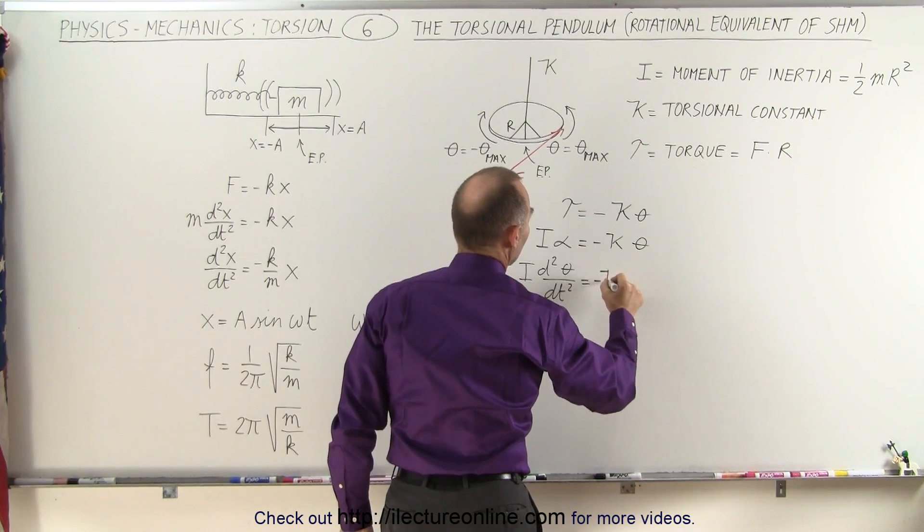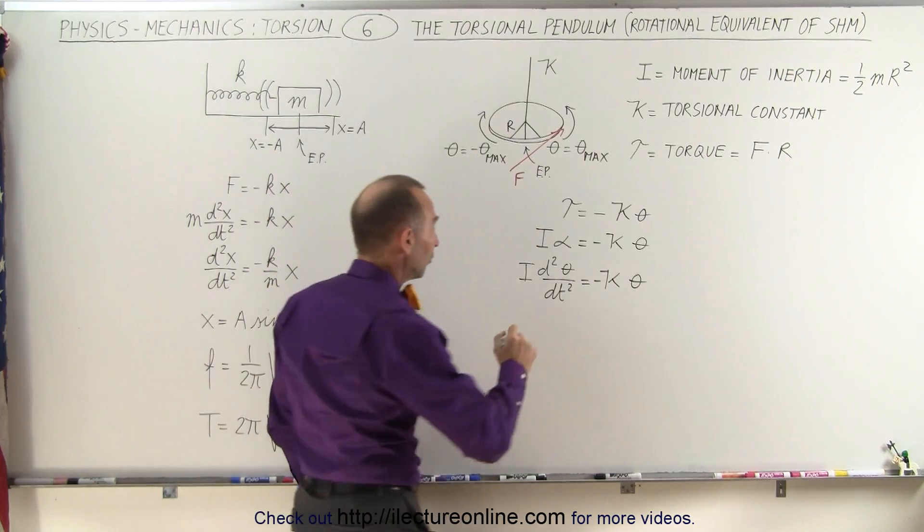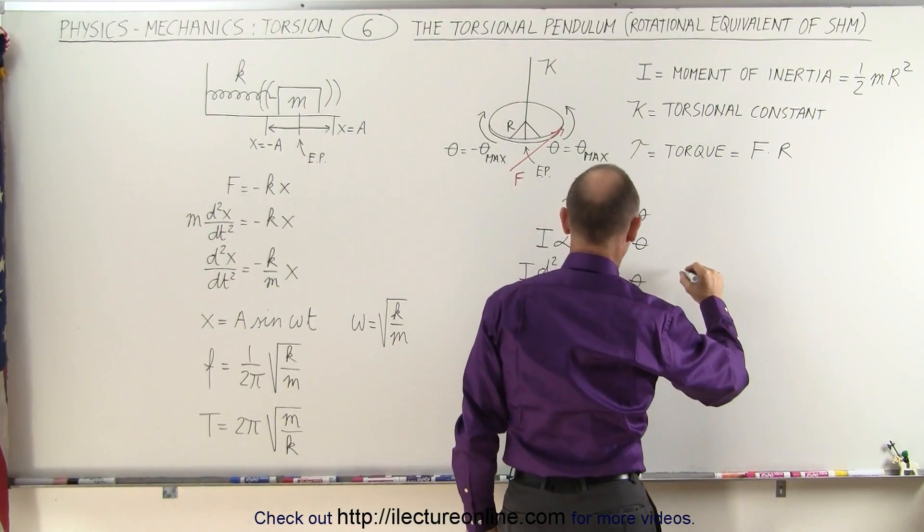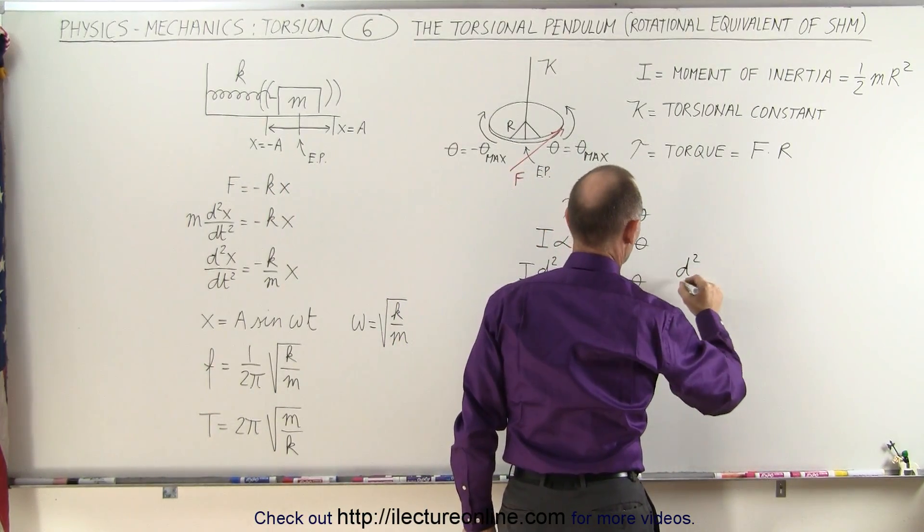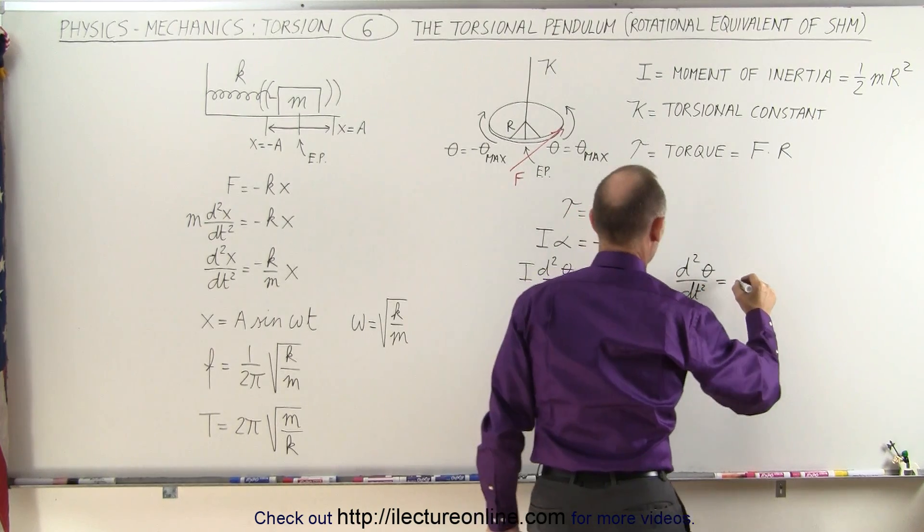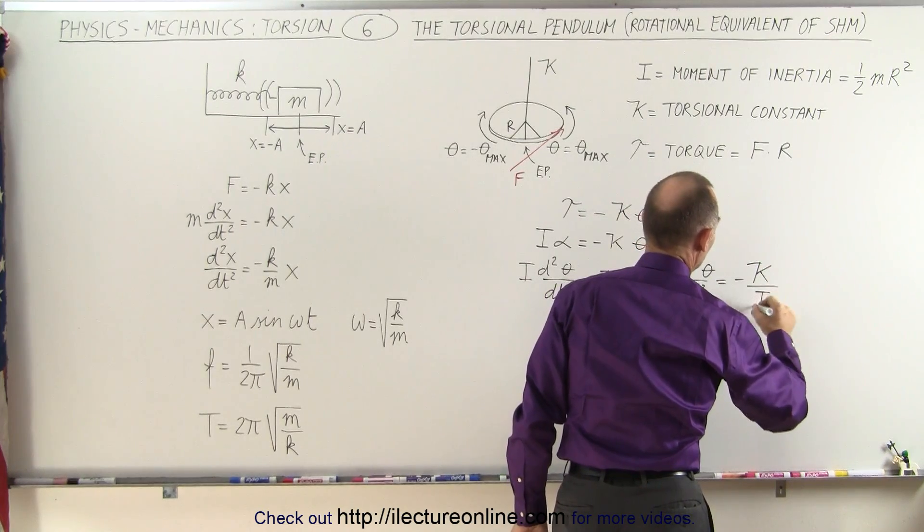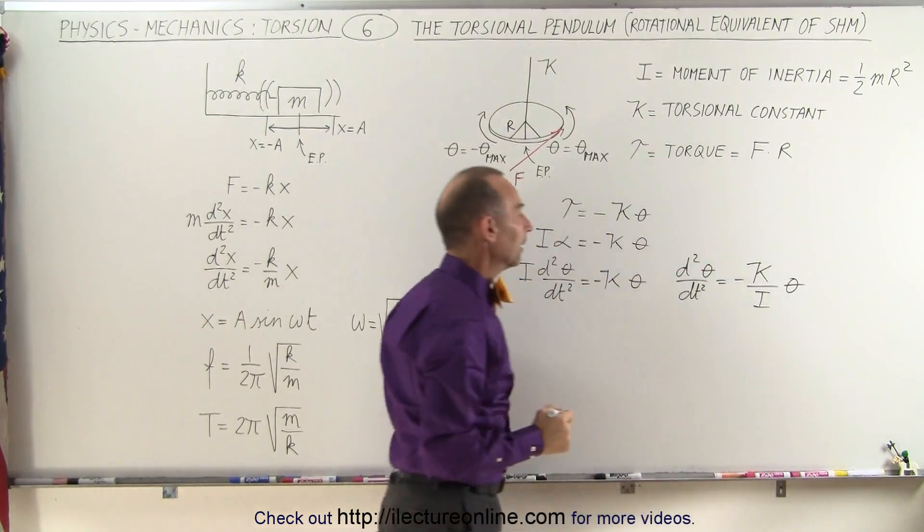Is equal to minus kappa times theta. And we can then rewrite this in this format. Let me go over here so I don't run out of room. That d squared dt squared of the angle theta is going to be equal to minus the torsional constant divided by the moment of inertia of the disc times theta.